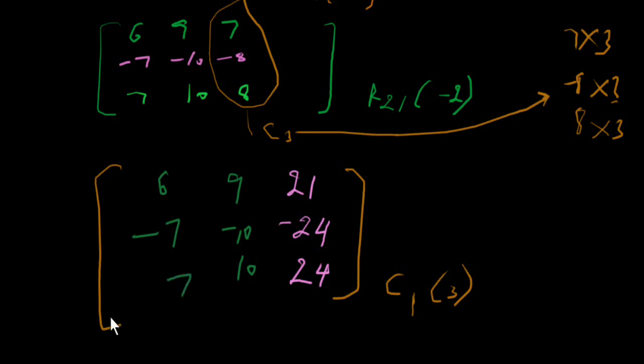You can multiply with a non-zero number and addition with other row, and also multiply with a non-zero number and addition with another column.